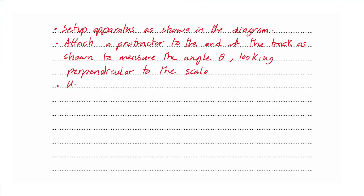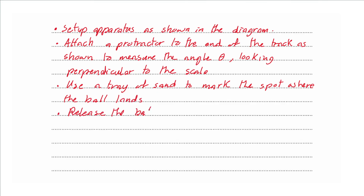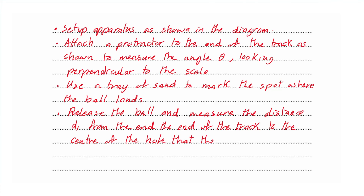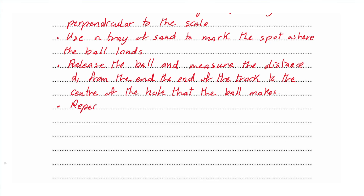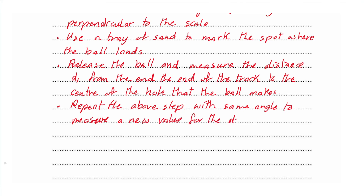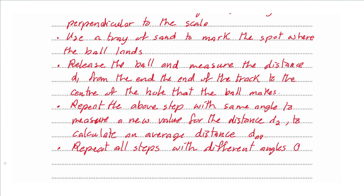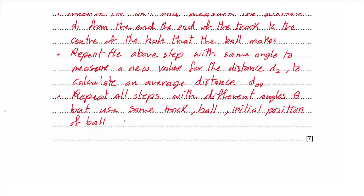Setup apparatus as shown. Attach a protractor to the end of the track to measure angle theta — look perpendicular to the scale. Use a tray of sand to mark the landing spot. Release the ball and measure distance D1 from the end of the track to the center of the hole. Repeat with the same angle to get D2 and calculate an average distance D-average. Repeat all steps with different angles, keeping the track, ball, and initial height constant.